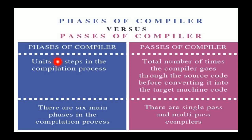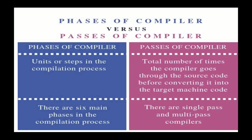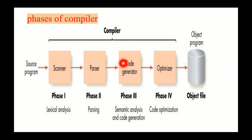Phases are the steps that are used during the compilation process, while passes are the number of times the compiler goes through the source code before converting it into the target machine code. In the case of phases, we mainly have six phases, while in the case of passes we could have a single-pass compiler, a two-pass compiler, a three-pass compiler, or multiple-pass compilers.